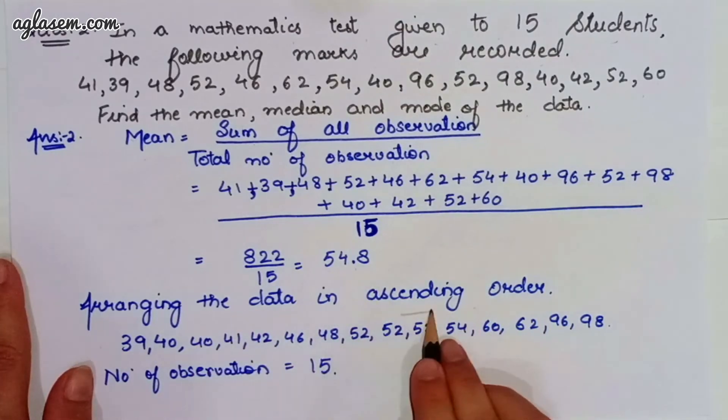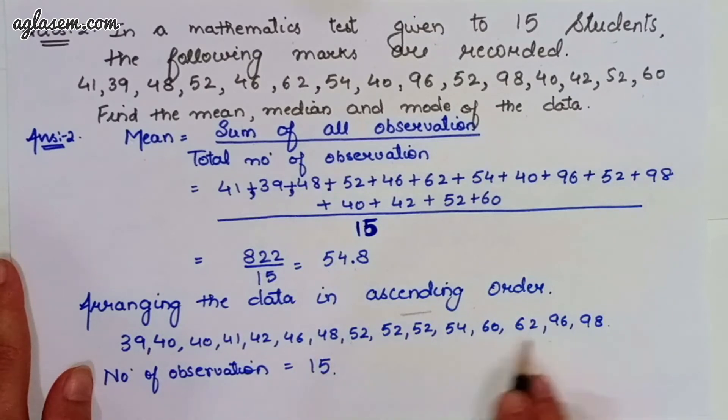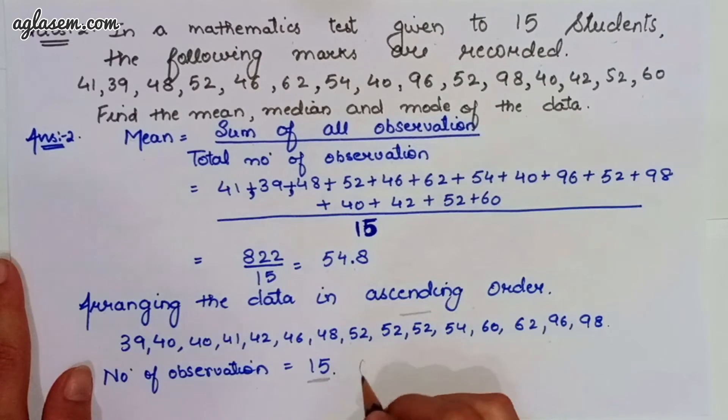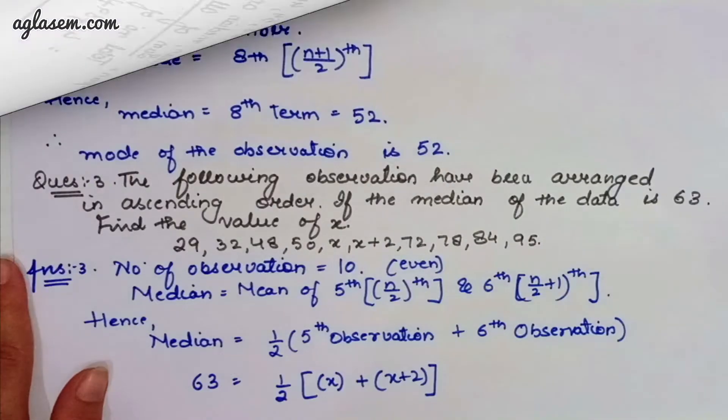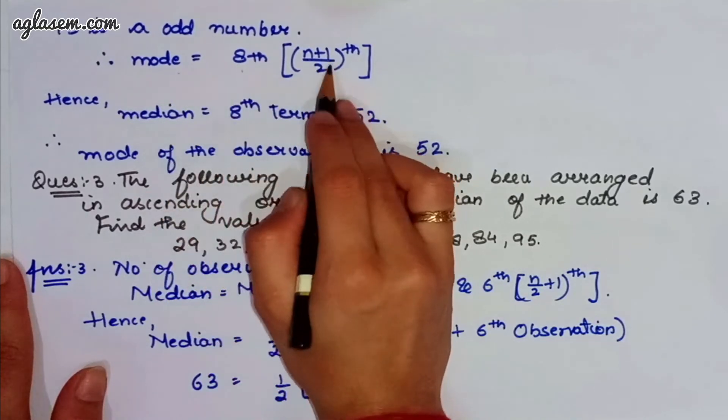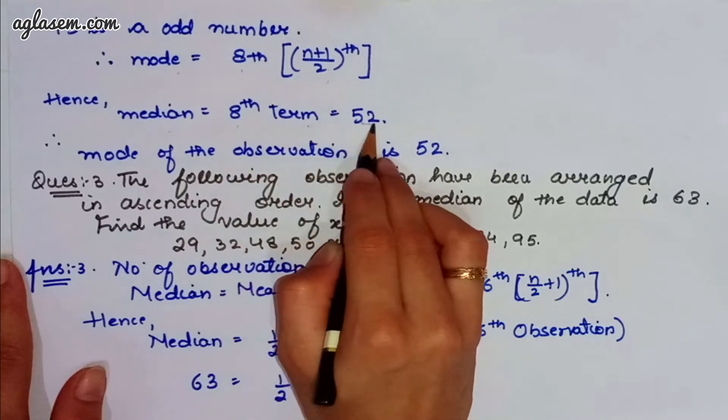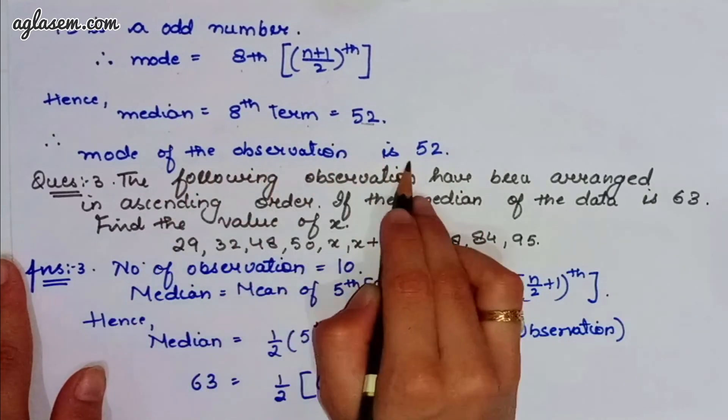Now, we have to arrange it in ascending order. Arranging it in ascending order, we will get this series. The number of observations we have counted, that is 15, which is odd. Moving further, 15 is the odd number, we know that mode is 8th, n plus 1 divided by 2. Median is 8th term, that is 52. So, the mode of observation is 52.